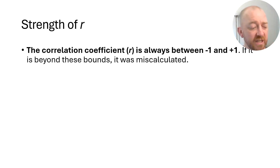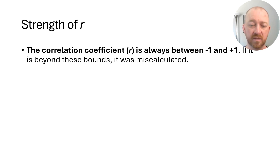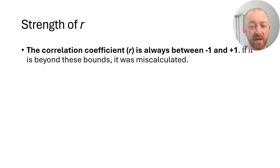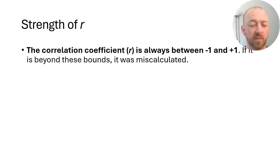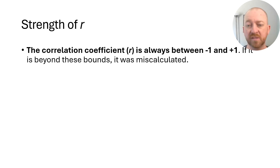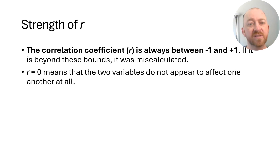In a correlation, the strength will always be somewhere between negative 1 and positive 1. The value of R is always between negative 1 and positive 1. It cannot go beyond those bounds mathematically, as we'll see when we work out a problem in a couple more lectures. Anything beyond those bounds means there's been some kind of mistake — a miscalculation.